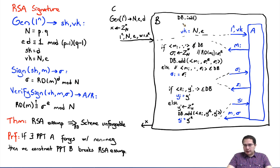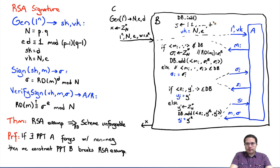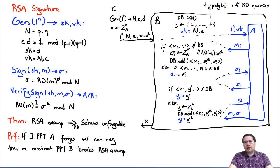We are going to integrate this in our proof so that the adversary's forged signature will help us find x. We will do something similar to what we did in the hybrid proofs. Remember there is no single challenge here — there are polynomially many queries the adversary is making. Just as in hybrid proofs we didn't know which hybrid the adversary would distinguish, we pick one randomly.